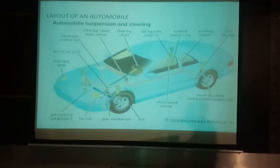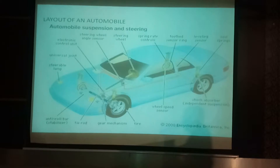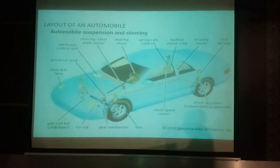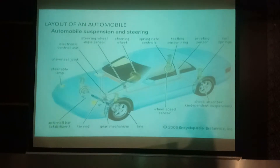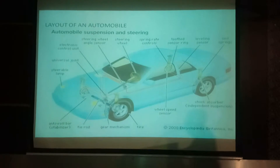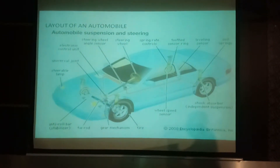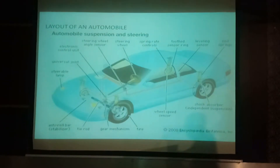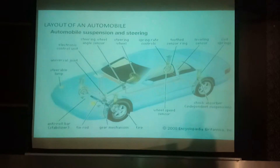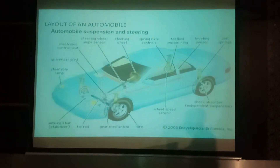Starting from the front, there is an electronic automatic unit, universal joint, tire, gear mechanism, tire lock, anti-roll bar. And that's the steering wheel, steering wheel angle sensor, spring brake controls, wind speed sensor, tooth sensor, leveling sensor, oil sticks, and shock absorber.